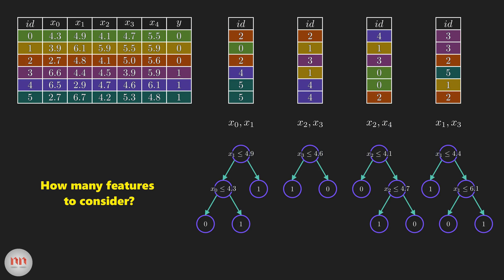Next point, what's the ideal size of the feature subset? Well, in our case, we took two features, which is close to the square root of the total number of features, that is five. Researchers have found that values close to the log or square root of the total number of features work well.